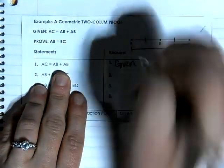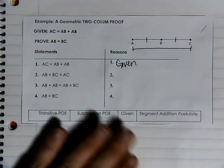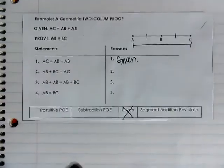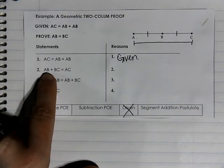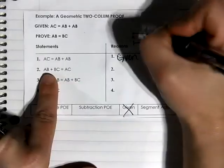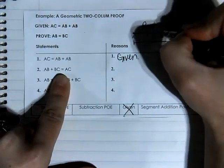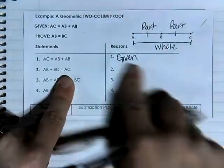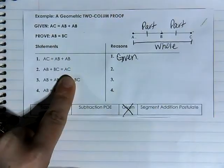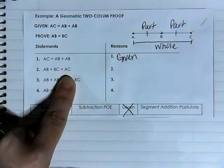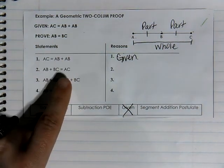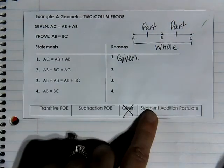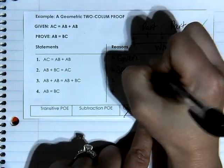Think about this: if AC, which is the whole, equals AB plus AB, and we know part plus part equals whole, somehow we have to connect that AB and BC are the same. This will require working with equations, the segment addition postulate, and algebraic properties from our last lesson. When starting a proof, we always write down what is given. What is given here is AC equals AB plus AB — we write this because it is given. The next statement is AB plus BC equals AC, which comes from the segment addition postulate: part plus part equals whole.